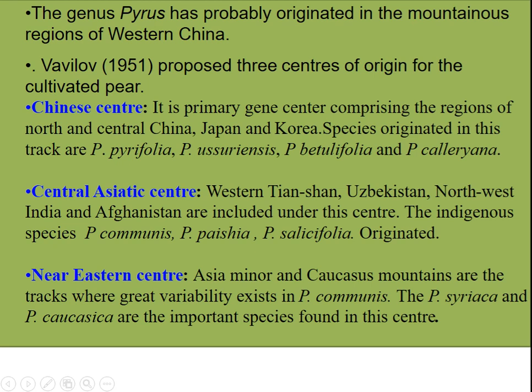The genus Pyrus has probably originated in the mountainous region of Western China. Vavilov in 1951 proposed three centers of origin for cultivated pear: the Chinese Center, which is the primary gene center comprising regions of North and Central China, Japan and Korea. The Central Asiatic Center belongs to Western Tajikistan, Uzbekistan, Northwest India and Afghanistan. The Near Eastern Center includes Asia Minor and the Caucasus mountains, where the greatest variability exists in Pyrus communis.